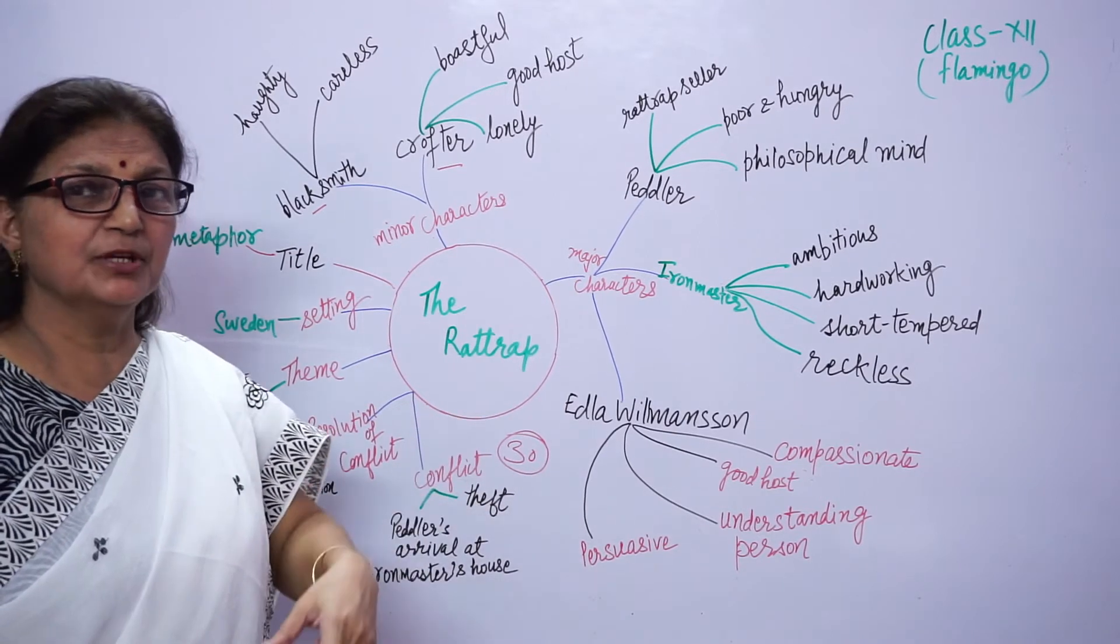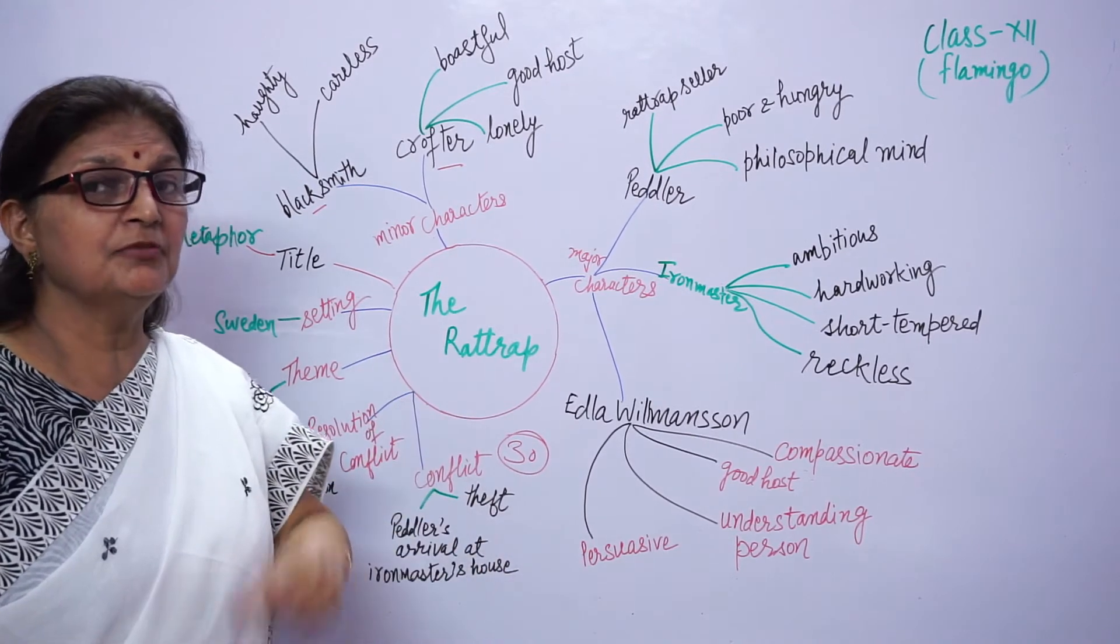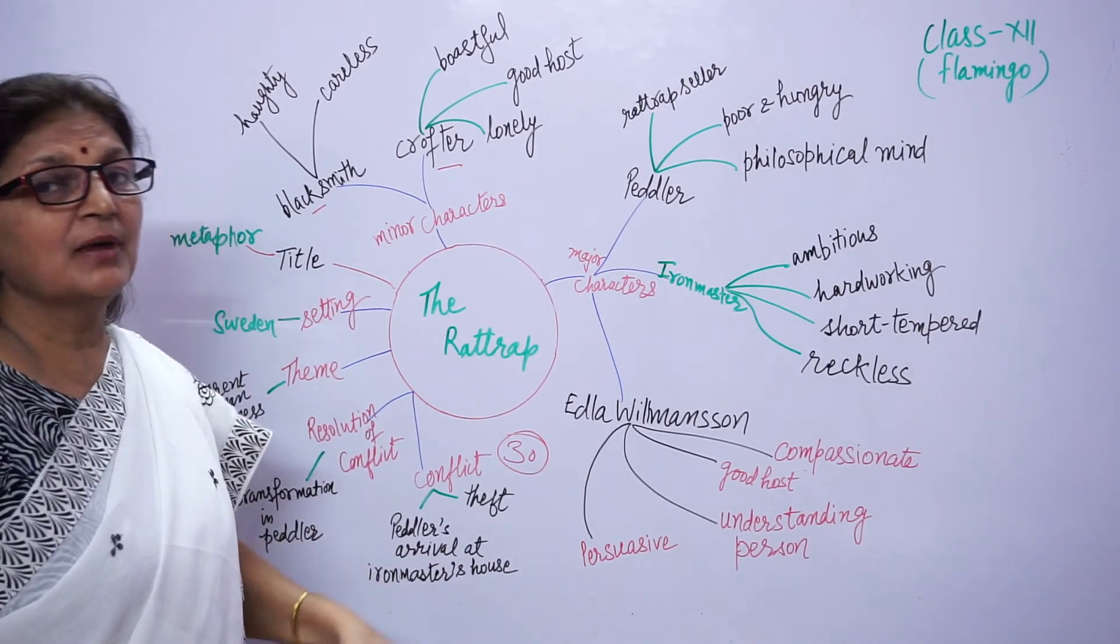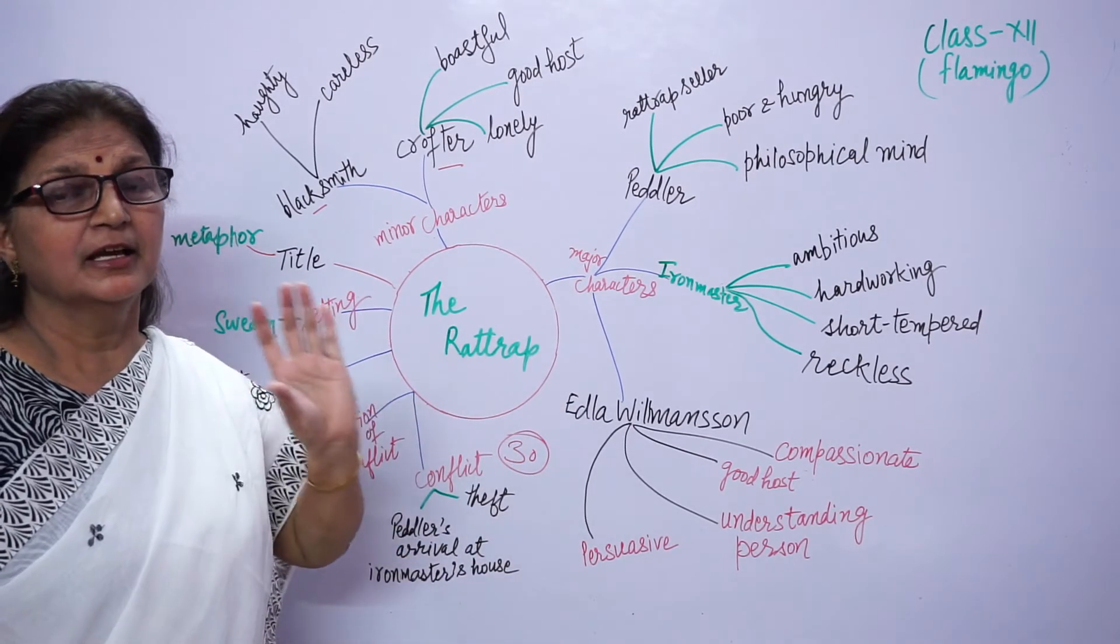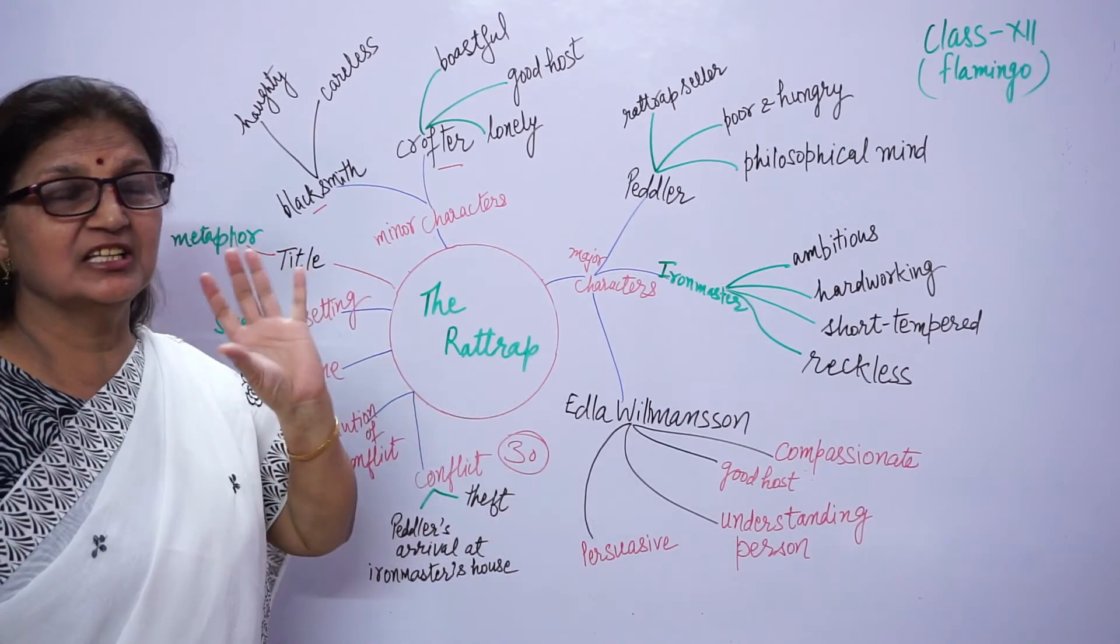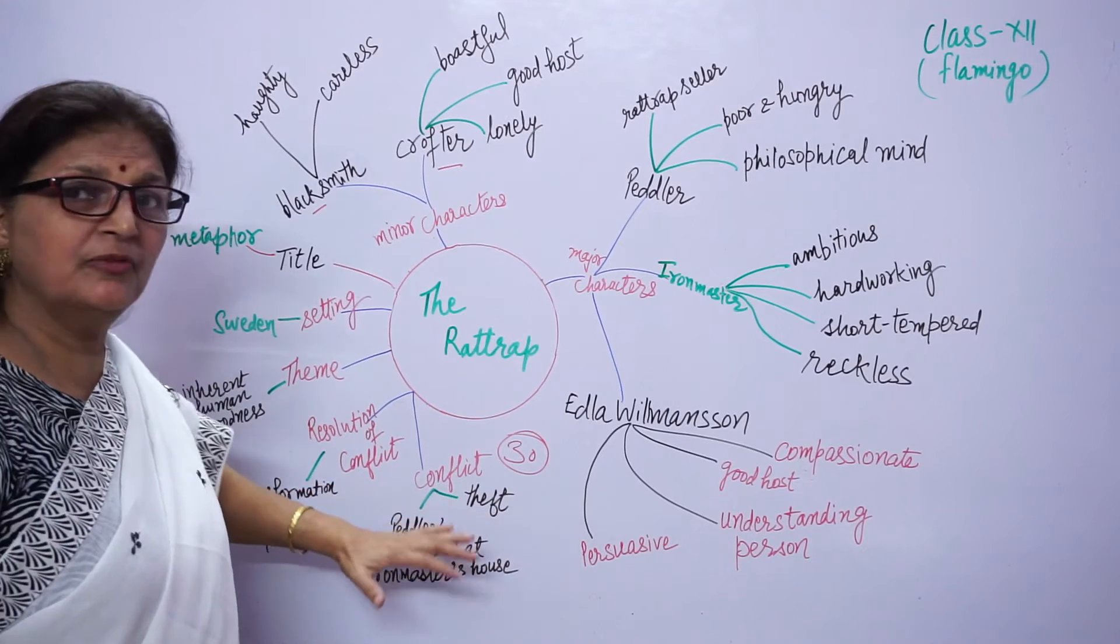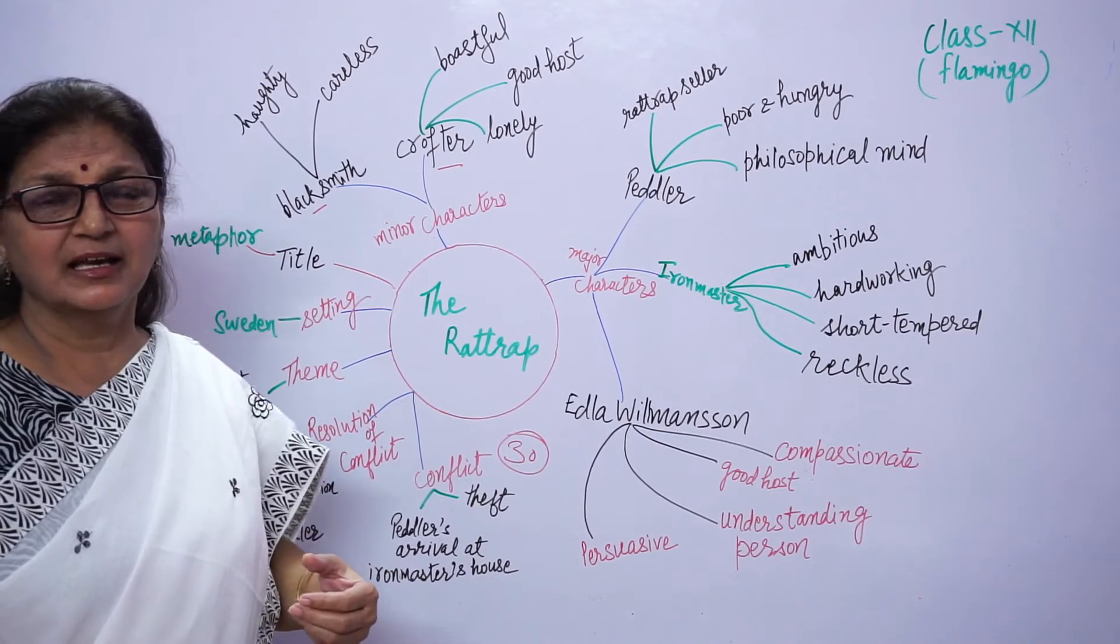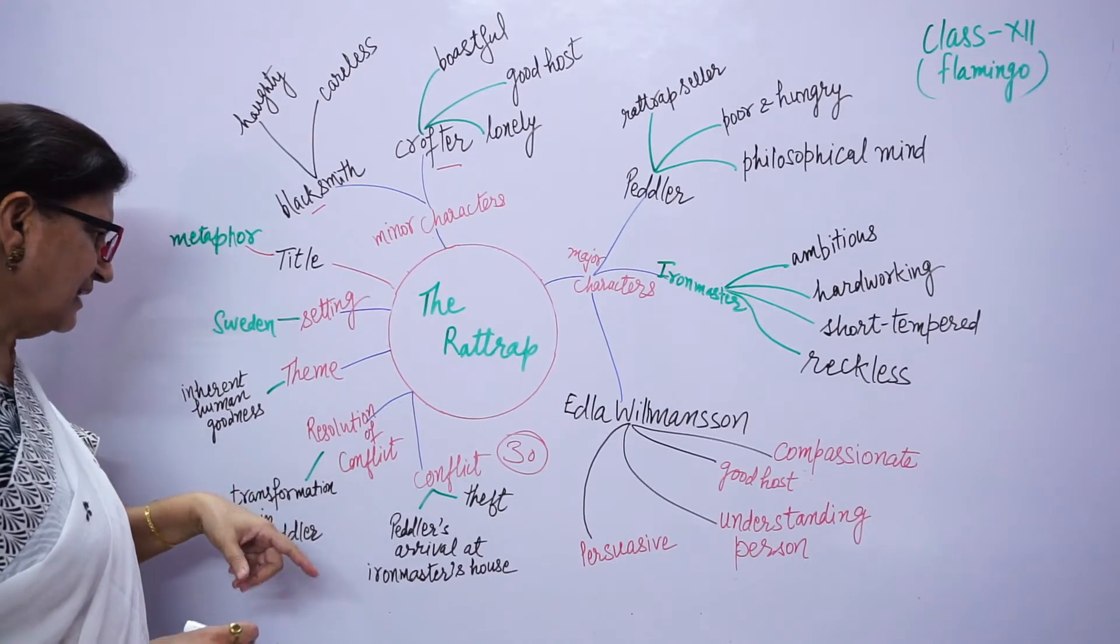He tries to escape the police. He declines the invitation of the iron master. When the iron master recognizes him and threatens him that he will call the police, that he cheated him, deceived him, there our conflict is at the climax. Every story writer resolves the conflict.